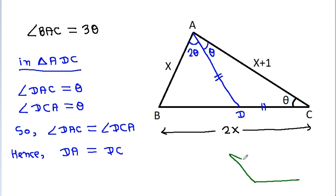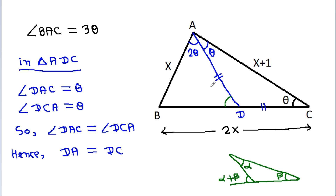DA will be equal to DC. So if this angle is alpha and this angle is beta, then this angle is alpha plus beta, so this angle will be θ, and that will be 2θ.